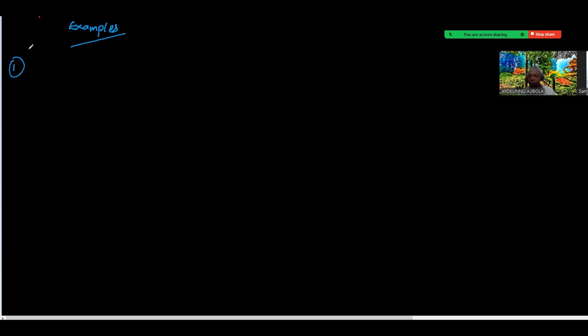Let's look at more examples. Number one: 1 over 5 times 2 over 3. You can see there is nothing common on the numerator side and denominator side. So I'll just say 1 times 2 gives 2 and 5 times 3 gives 15 — and that's my answer because I can't reduce it further.